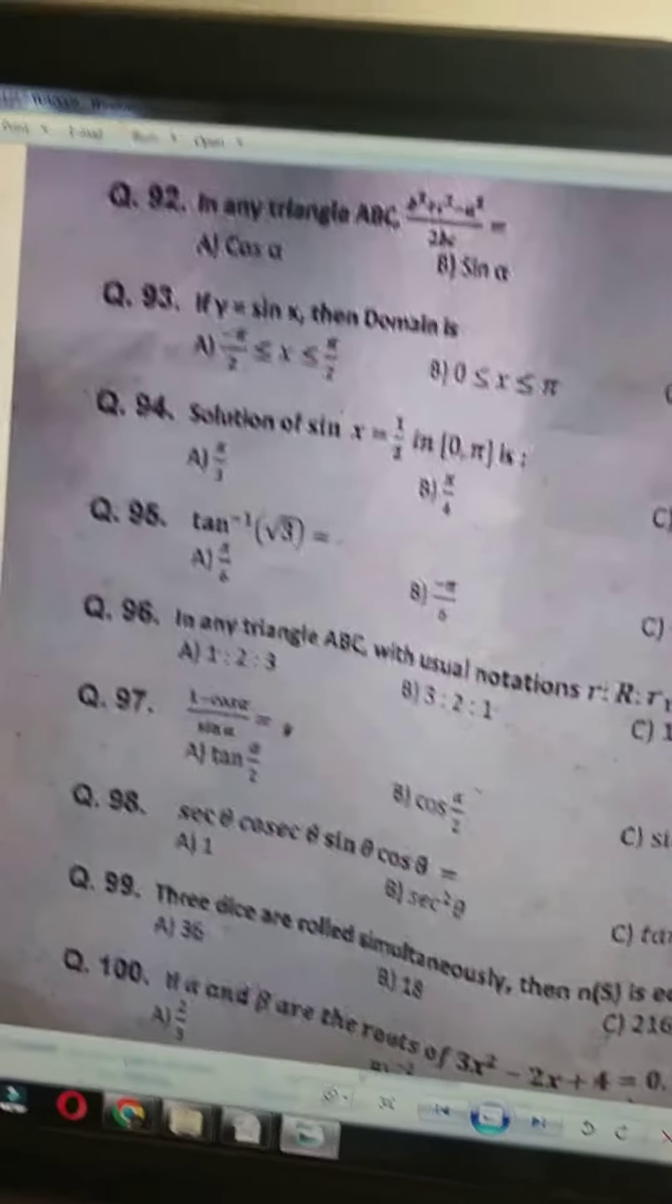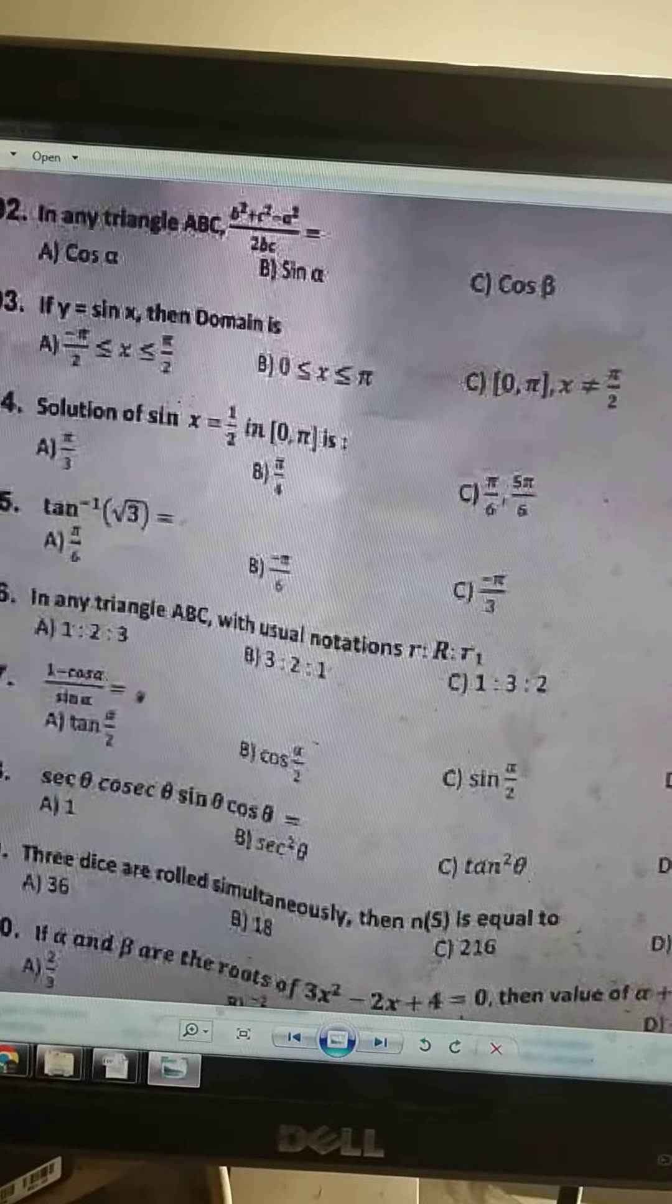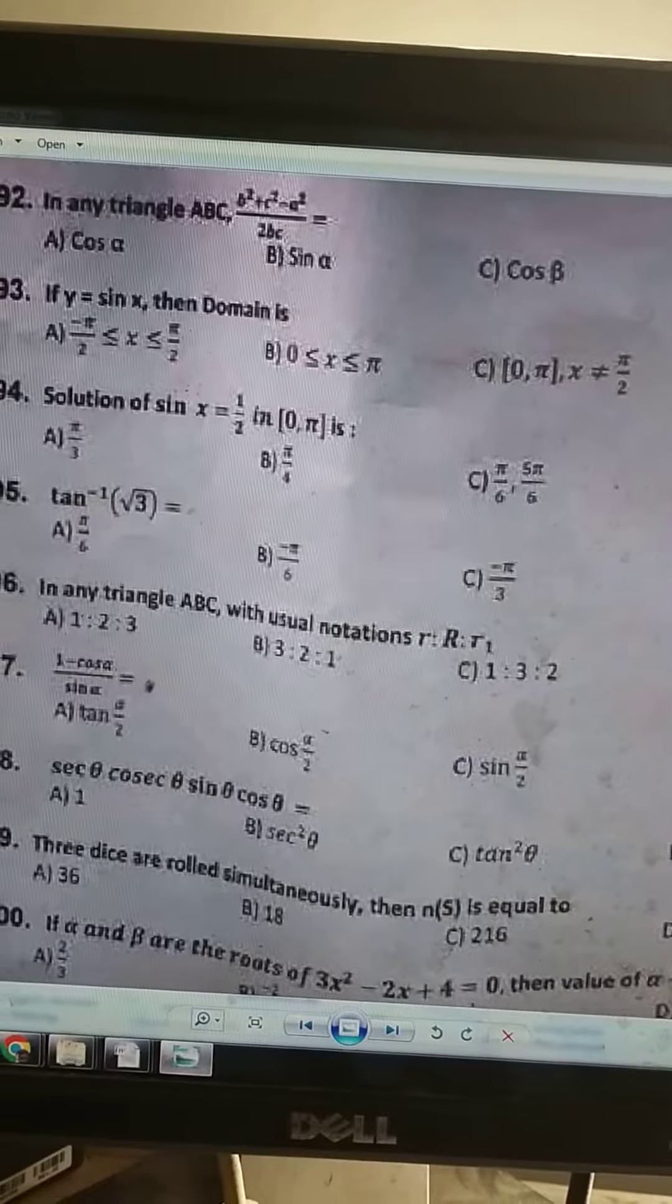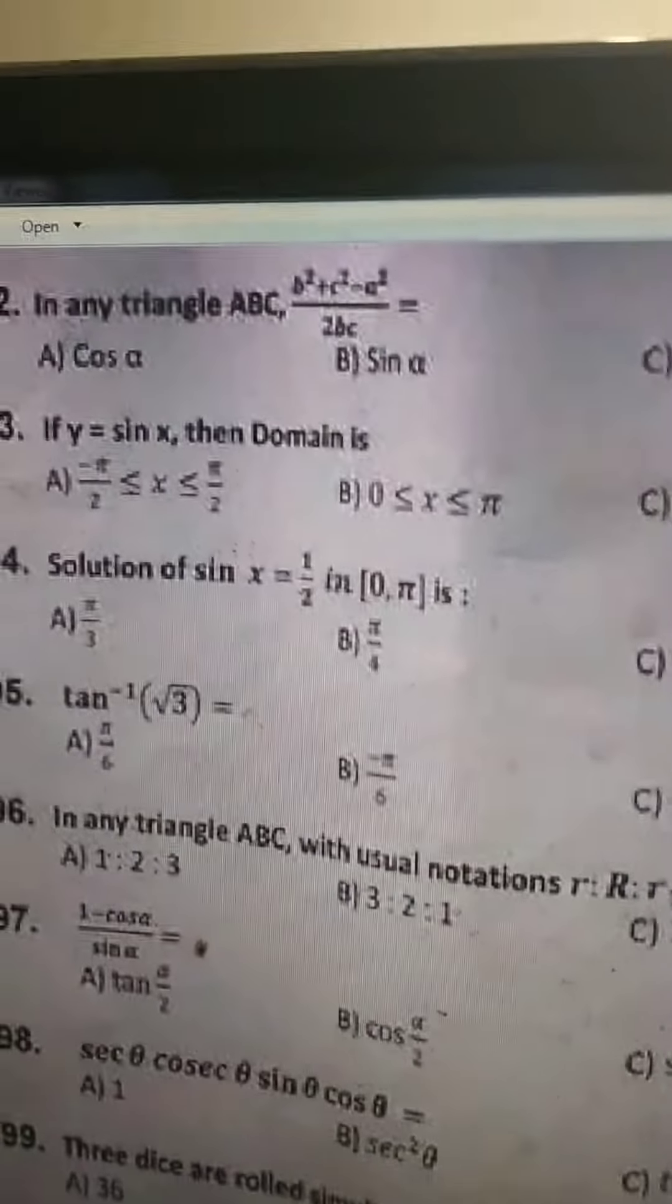Okay, KUK paper is the next question. In any triangle ABC, B square plus C square minus A square upon 2BC. So the trick with B square minus will be cos alpha.